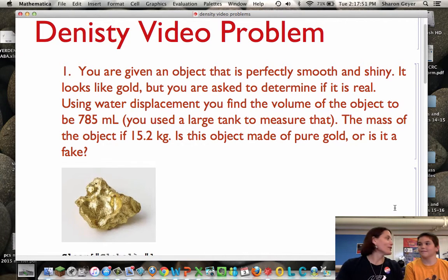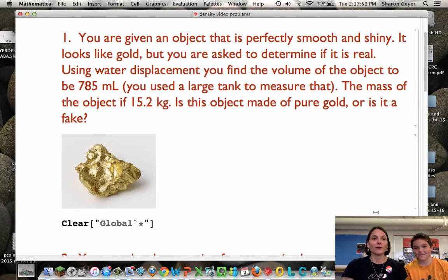Garrett, we're going to use the density to figure out if it's real gold. So the first thing we've got to do is figure out what data we have. We know that the volume of the object is 785 milliliters, and we know the mass of the object is 15.2 kilograms. So we can take that information and calculate the density of the object that's been measured and compare that to the density of gold.